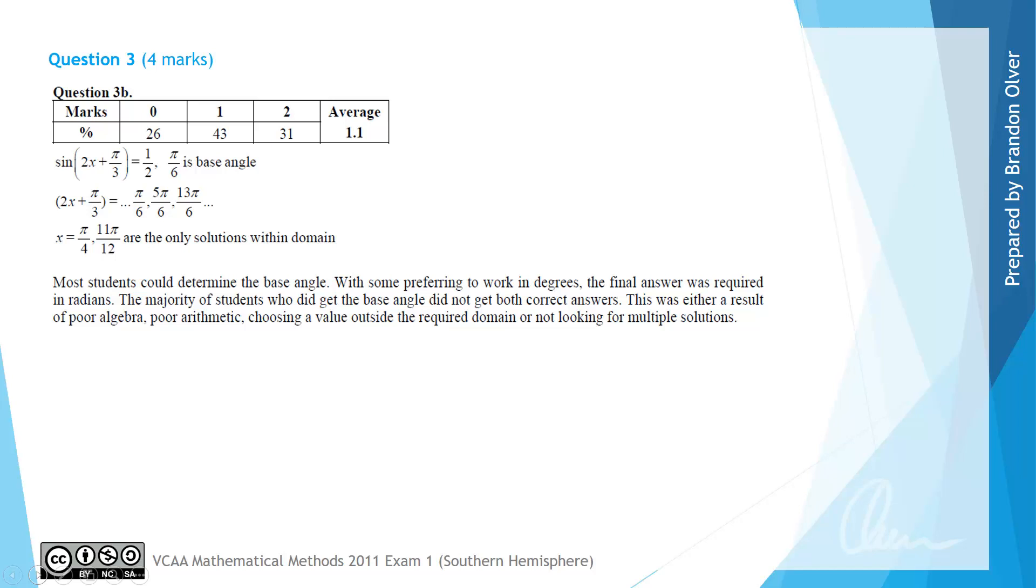From the examiner's report we can see that 31% of students got full marks for this question and 43% made some progress. Most students could determine the basic or reference angle of pi on 6, with some preferring to work in degrees though the final answer was still required in radians. The majority of students who did get the base angle did not get both correct answers, due either to poor algebra, poor arithmetic, or choosing a value outside the required domain, or not looking for multiple solutions. These are all things you should keep in mind when solving trigonometric equations.